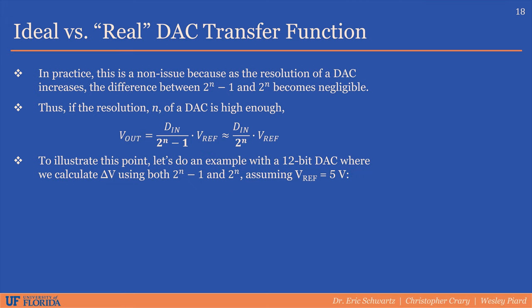To show you an example of exactly what I mean by this, let's calculate the smallest voltage increment a 12-bit DAC can output using both 2^n minus 1 and 2^n for our calculations. Assuming the reference voltage is 5 volts. When we use 2^n minus 1, as shown here, we get a delta V of 1.2210 millivolts. And when we use 2^n, we get a delta voltage of 1.2207 millivolts.